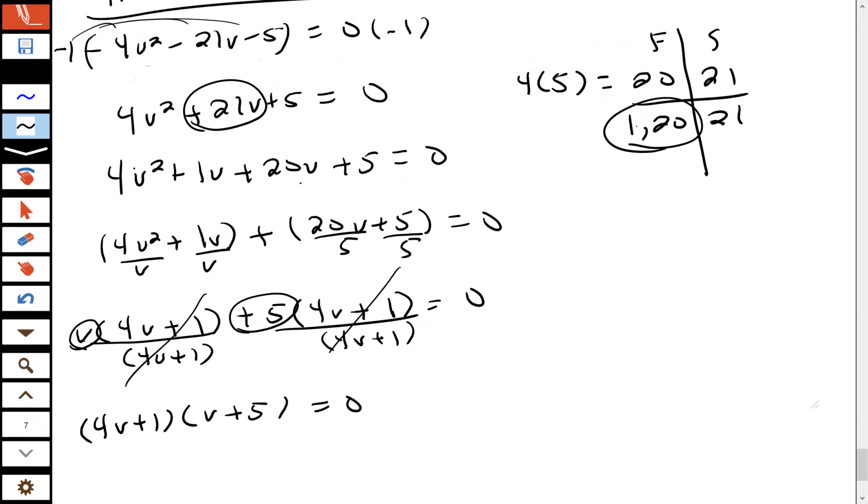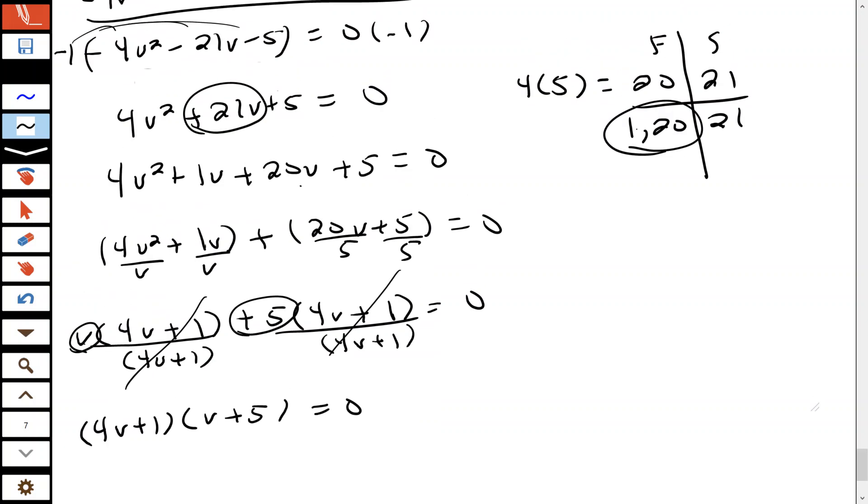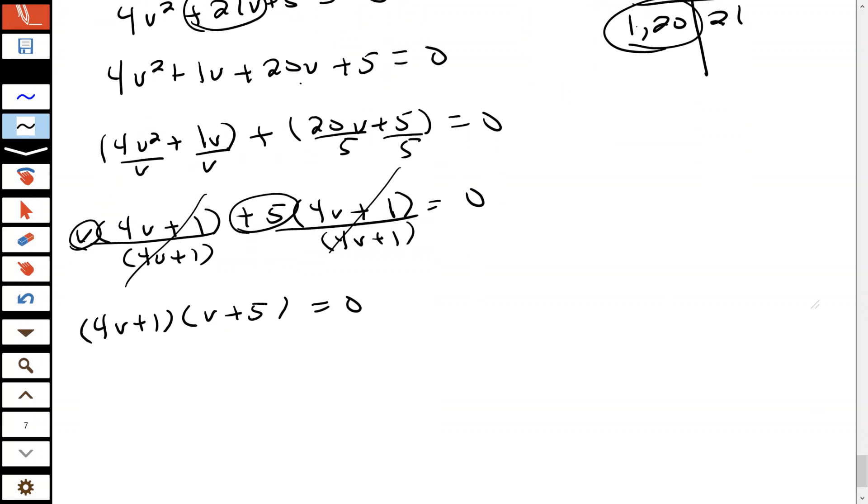We've gone through this AC method. We have this expression completely factored, so now we need to set each one of the factors equal to zero and solve the equations.